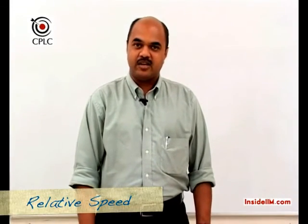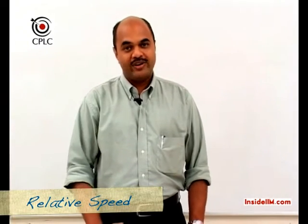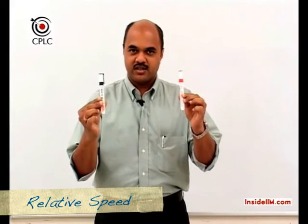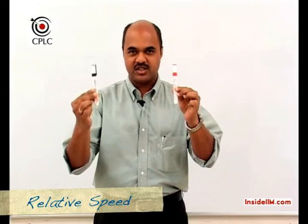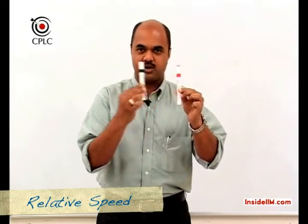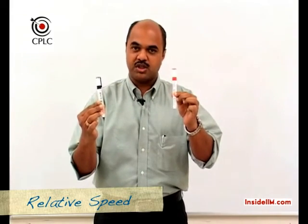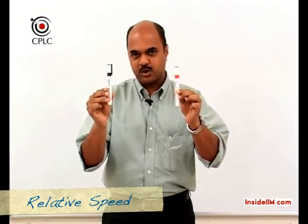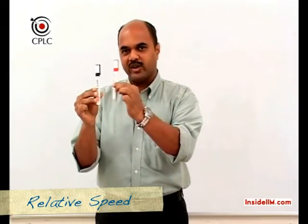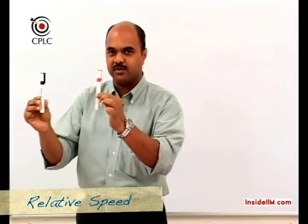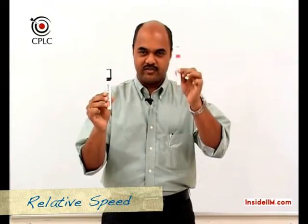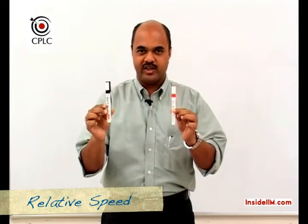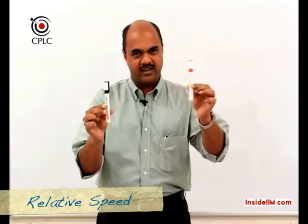The concept of relative speed applies when we have two moving objects — it is the speed of one object in relation to the other. If one object is stationary, the relative speed is simply the speed of the moving object. When both objects are moving in the same direction, the moving object ahead makes it harder for the other to catch up.